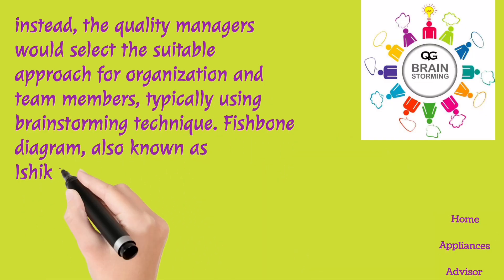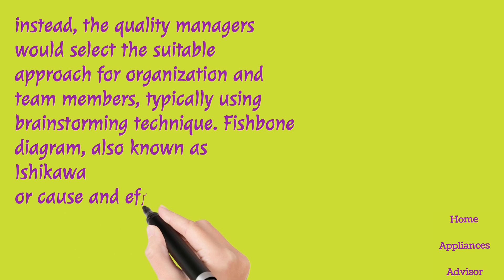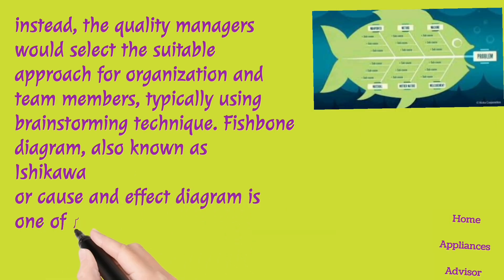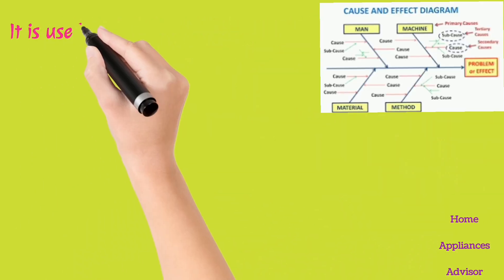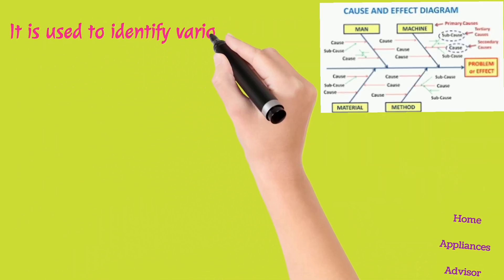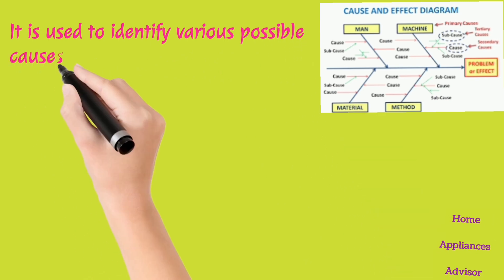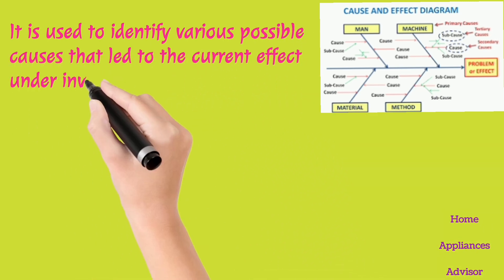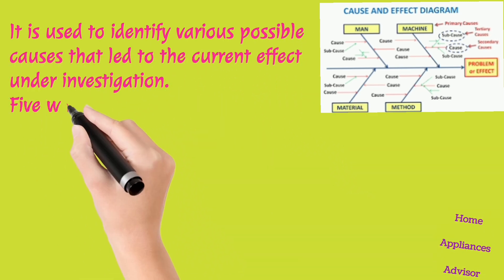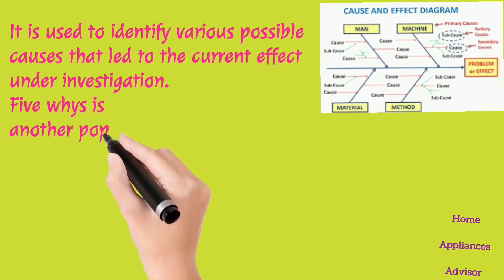The Fishbone Diagram, also known as the Ishikawa or Cause and Effect Diagram, is one of the classic tools for RCA. It is used to identify various possible causes that led to the current effect under investigation.